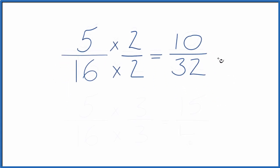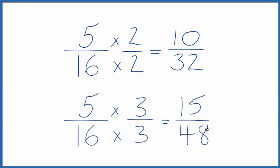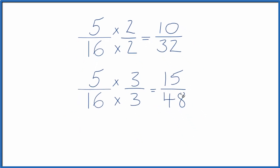Let's try another one. We could multiply by 3 over 3. Again, we're dividing 3 by itself, so we get 1. When we multiply by 1, we don't change the value, just the representation. So another equivalent fraction for 5 sixteenths is 15 forty-eighths.